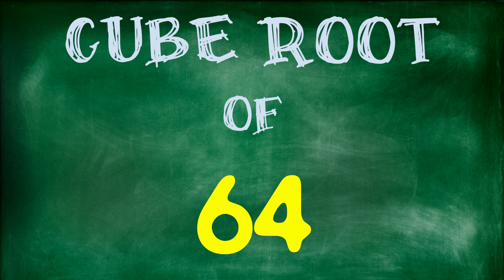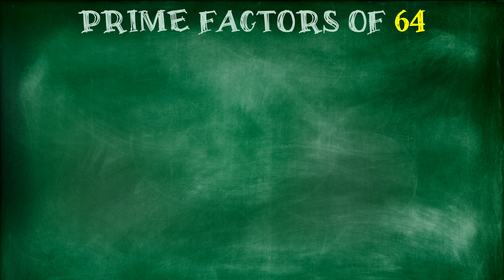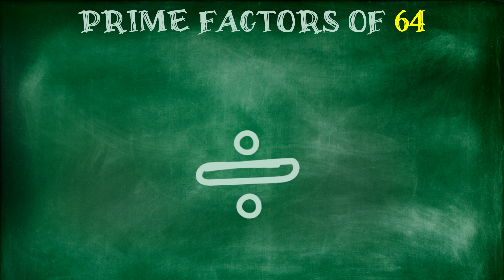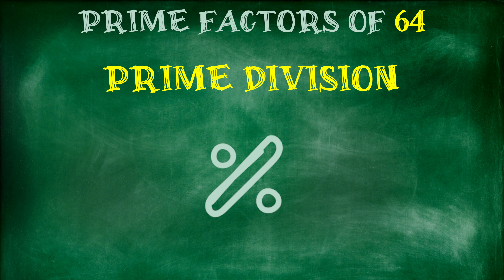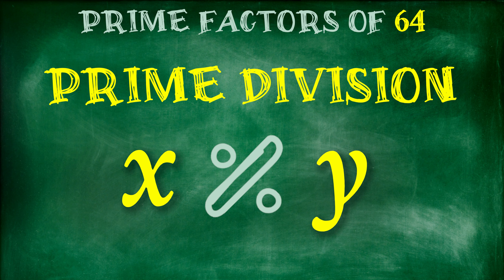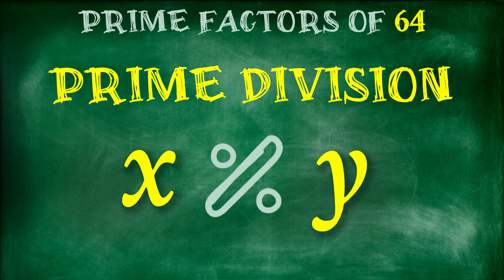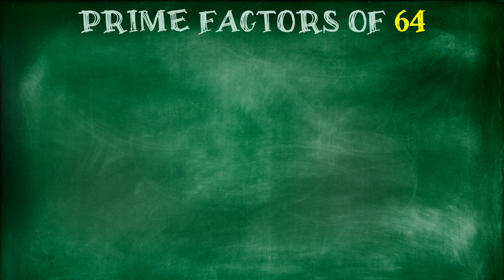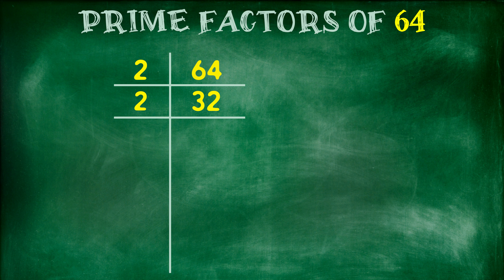We are going to learn how to find the cube root of 64 using a method called prime division. First, we will find the prime factors. To find these prime factors, we need to divide 64 by prime numbers until we can't divide anymore.